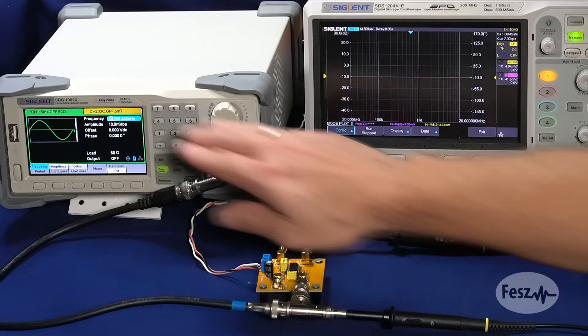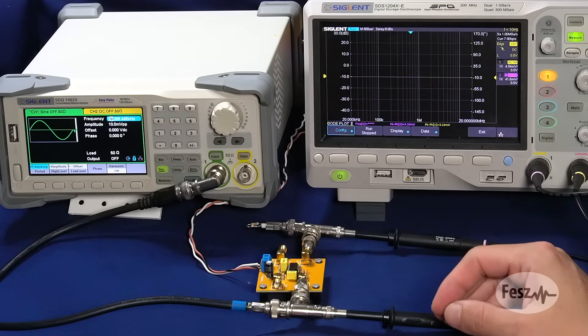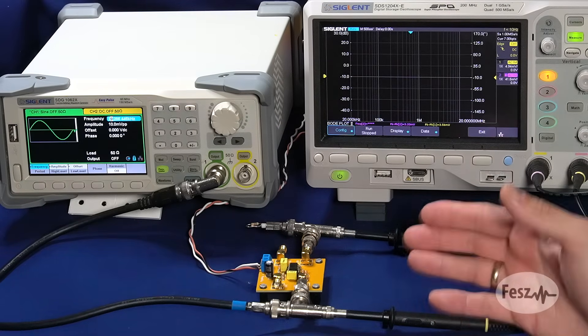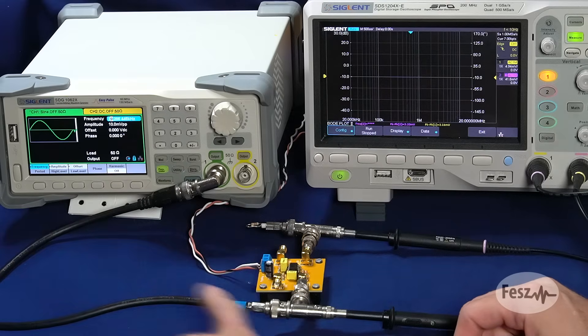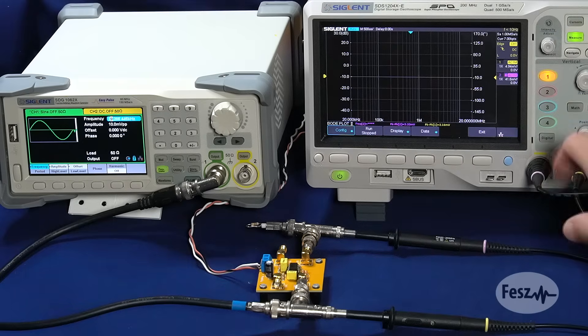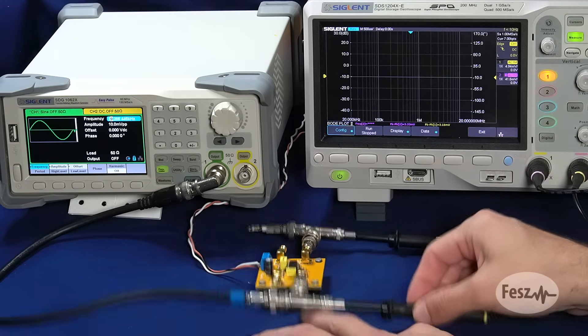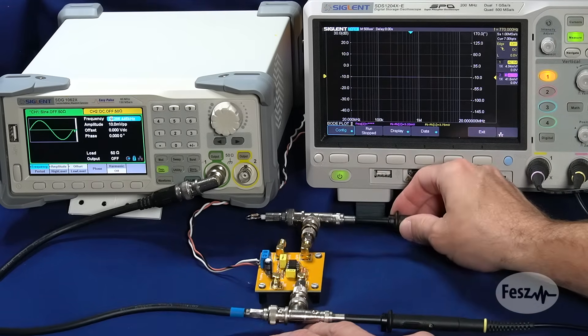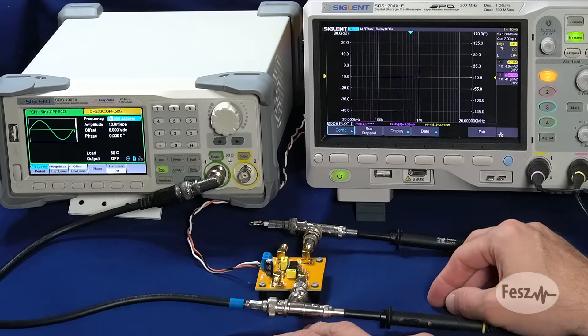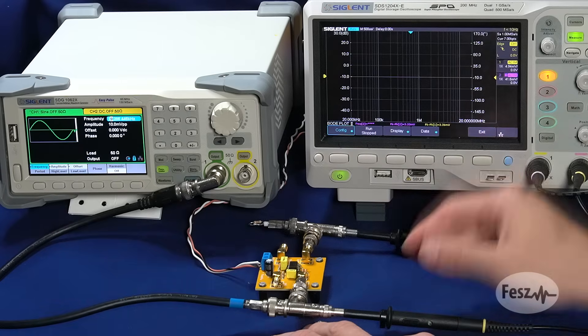So what I have here is an oscilloscope and signal generator, which together can create both the plots. The generator output goes into the test circuit, and the oscilloscope measures both the incoming signal as well as the output at multiple frequency points, and then proceeds to calculate the voltage ratio and phase difference.